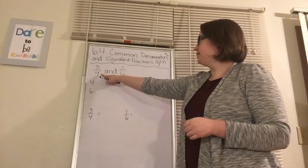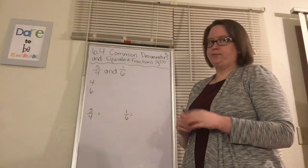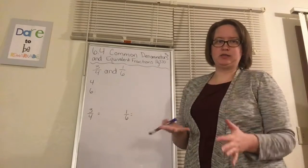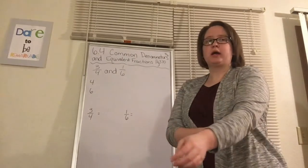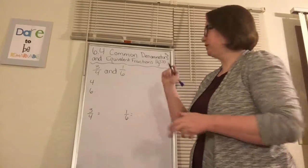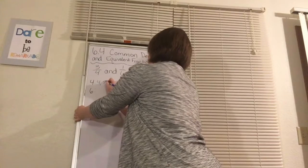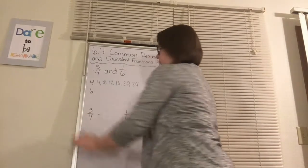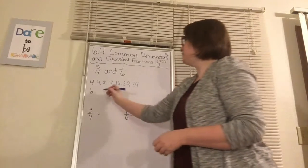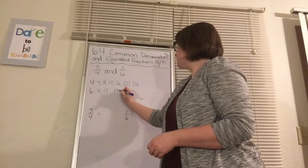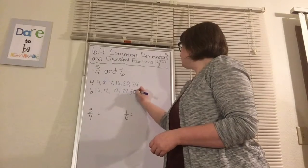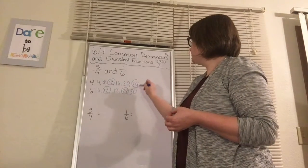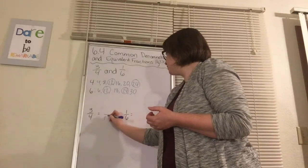Now we're going to look at the next example: 3/4 and 1/6. Again, our first step is to find our common denominator, and we can do this by either multiplying or by listing out our multiples. I highly suggest you list out your multiples because they'll give you a smaller common denominator to work with. The multiples of 4 are 4, 8, 12, 16, 20, 24. The multiples of 6 are 6, 12, 18, 24, 30. We look for our common ones, and I see that we have 12 and 24. So our common denominator is going to be 12.